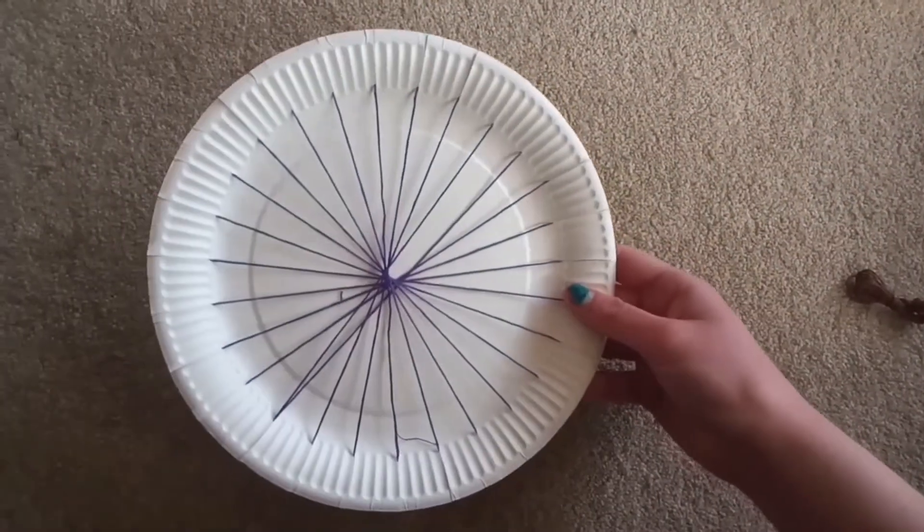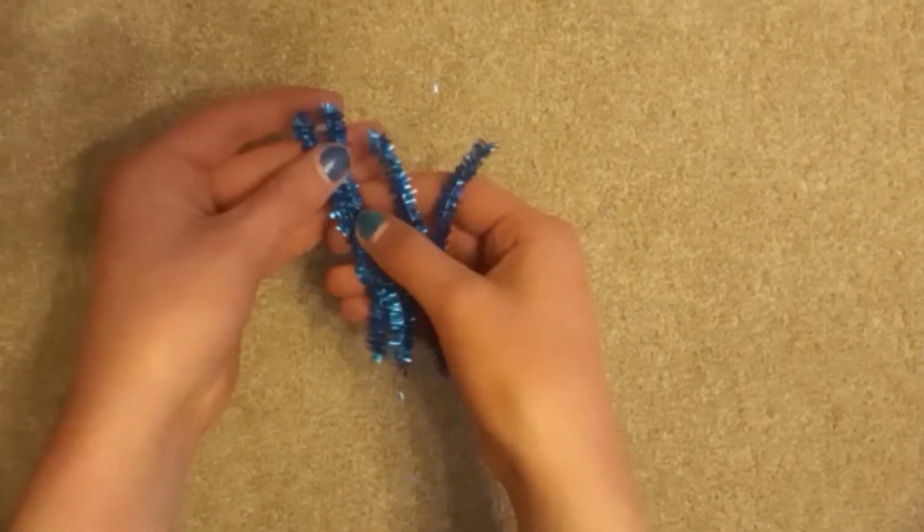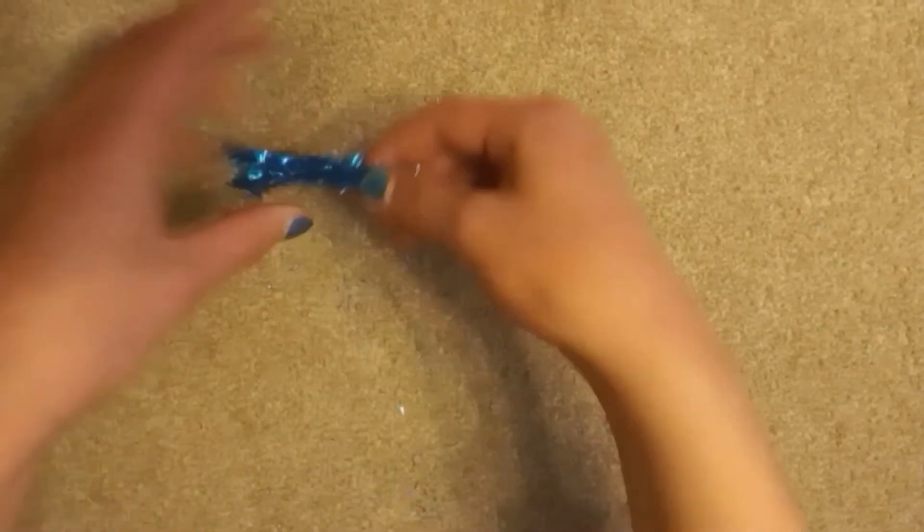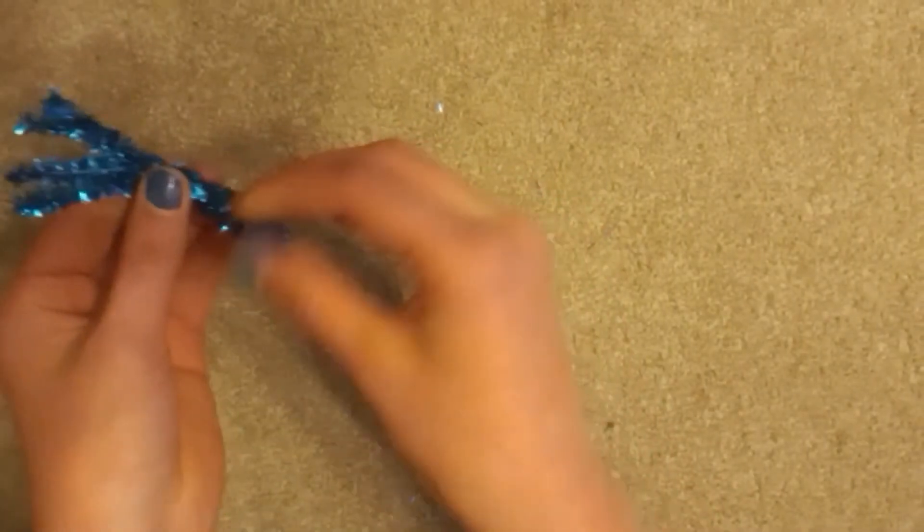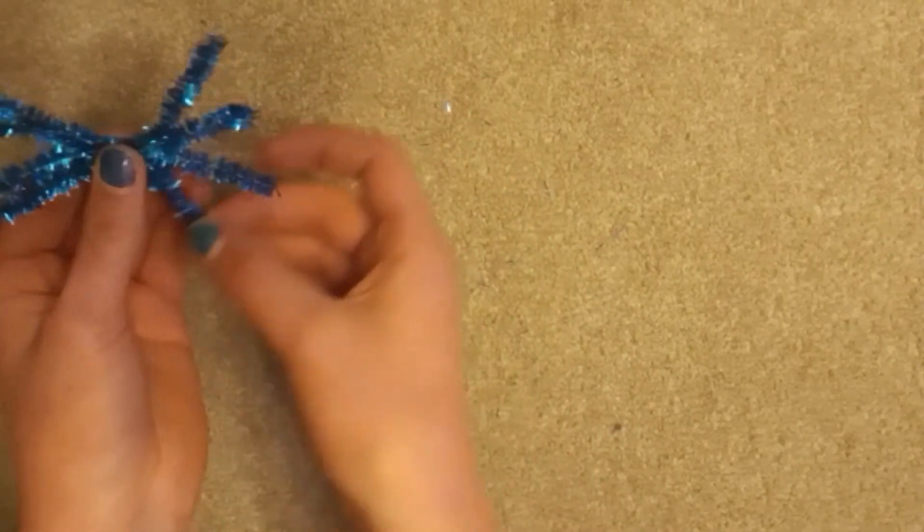And here's our finished spider web. Now we're going to make our spider. We're going to make the spider legs out of some pipe cleaner and twist it round to keep it secure. You're going to need to separate out so you can see all of the legs like this.